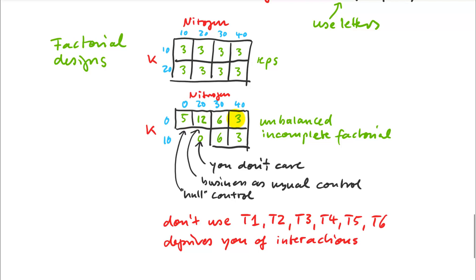Null controls can still be good even if they are not realistic — they often serve as a check for screw-ups. For example, if your plants are all dying unexpectedly, the null control helps you determine whether something went wrong with your treatment application, such as accidentally grabbing herbicide instead of nitrogen. If you treat the null control exactly like every other treatment except leaving out the active ingredient you're investigating, it can help troubleshoot problems. If plants are dying in the null control as well, then it has nothing to do with your treatment. This is especially important for complicated lab experiments with lots of ingredients. Just a few replications usually does the job.